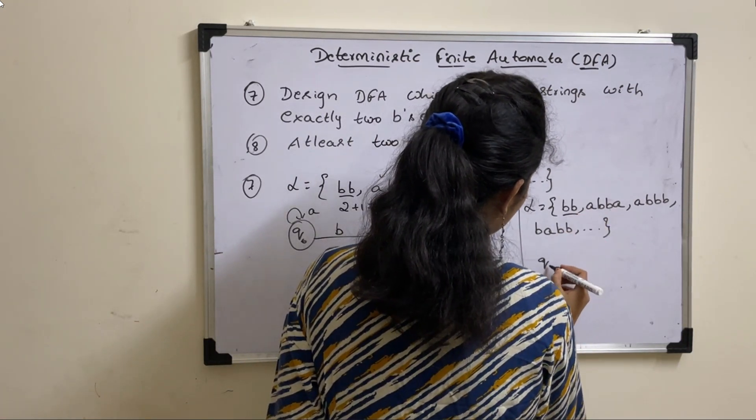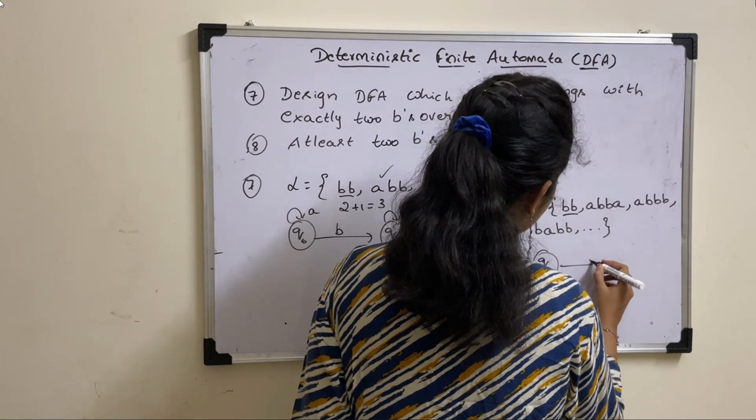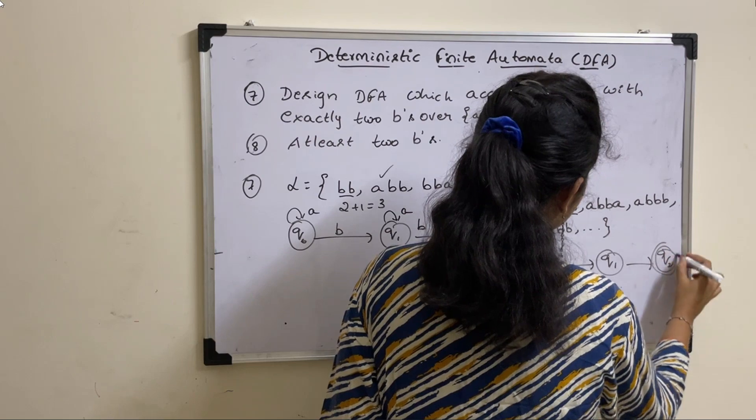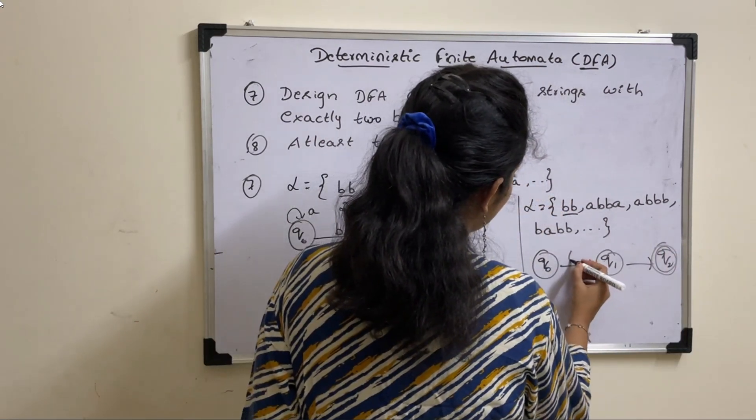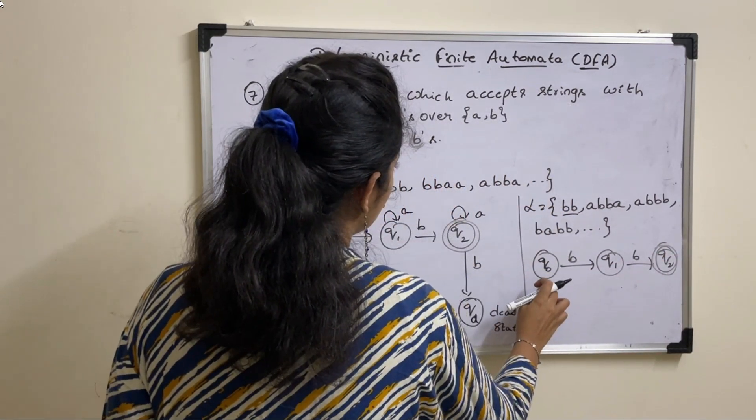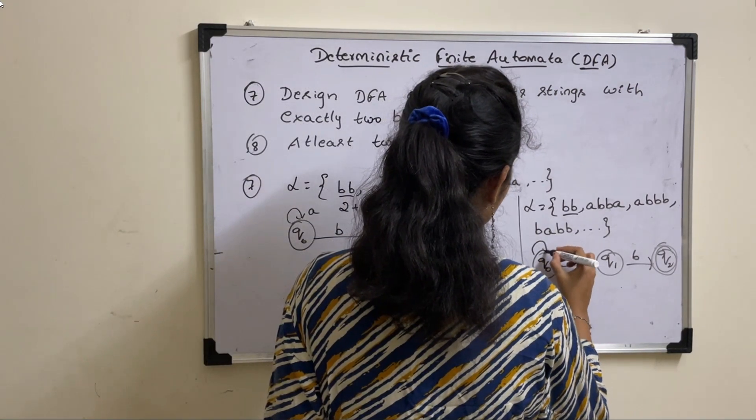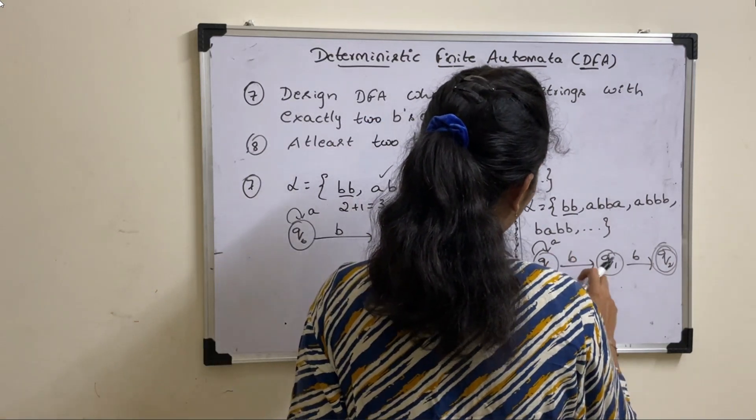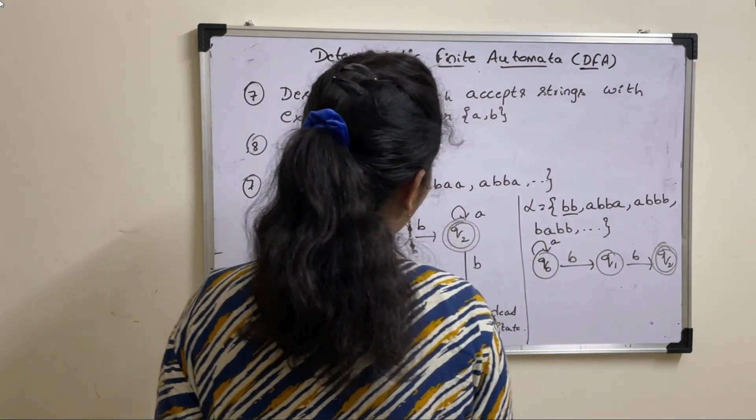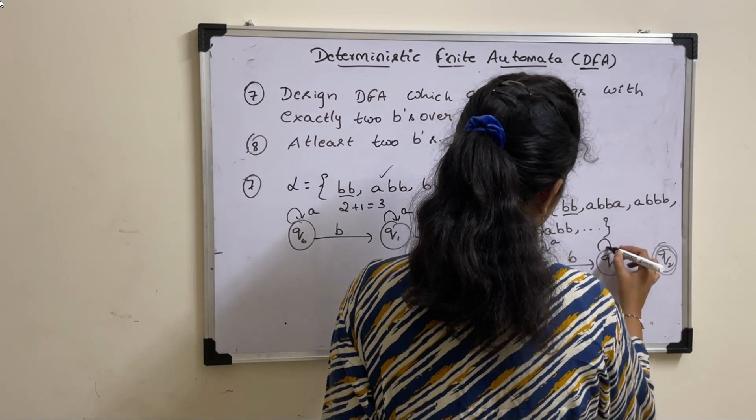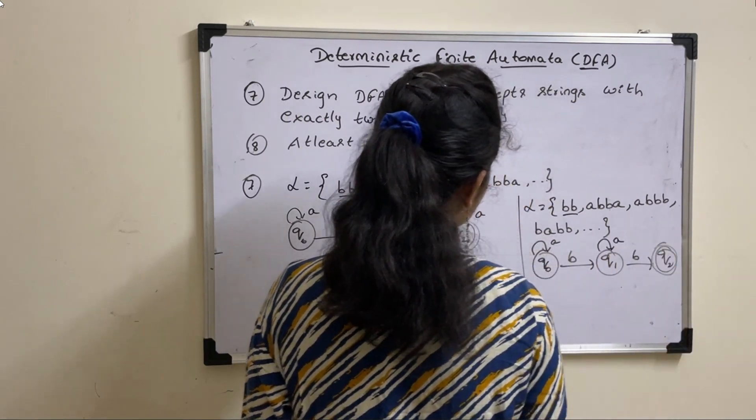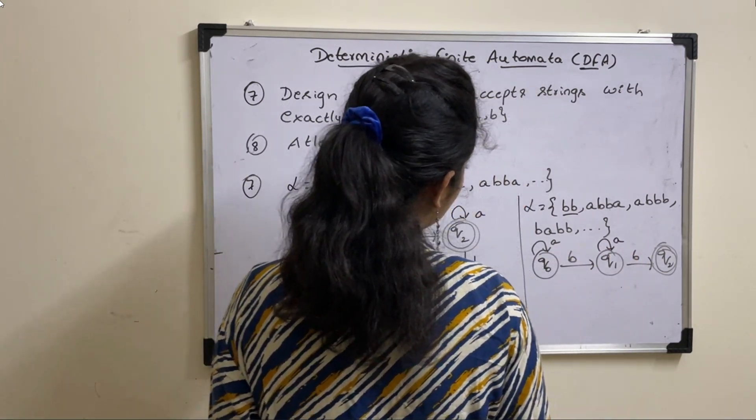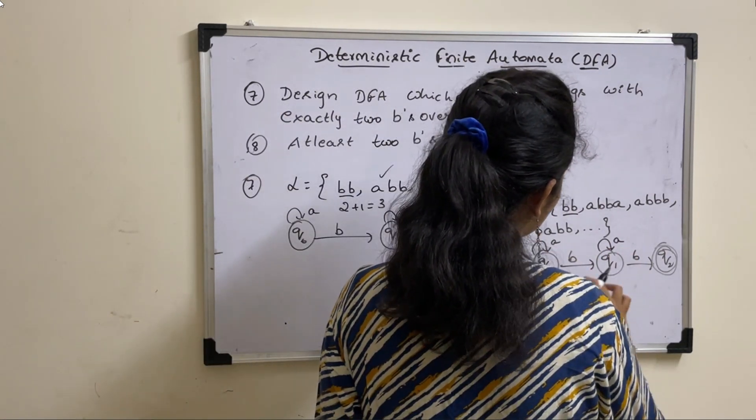Now, minimum string is BB. So number of states required are two plus one, three. So place BB. Can you place self loop A? Yes, your string can have ABB. That is allowed. And can we have A here? Yes, this is also allowed. You will get ABAB. So string containing two B's.